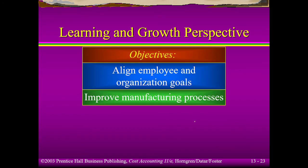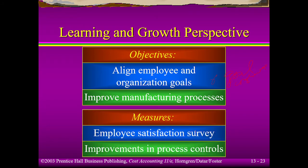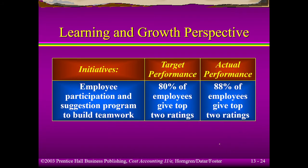As to the learning and growth perspective, we look at aligning employees with organizational goals — as we discussed in responsibility accounting, goal congruence — and improving the manufacturing processes. The indicators include satisfaction surveys and looking at improvement in process control as their KPI. Based on the sample, the results of the survey all passed.